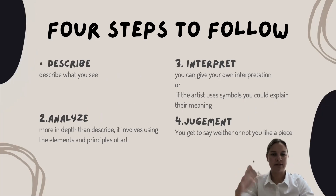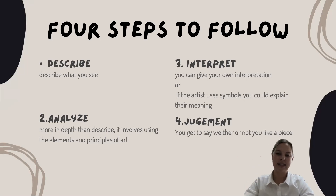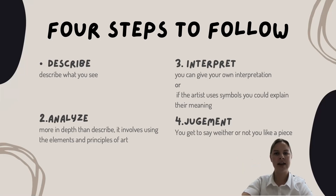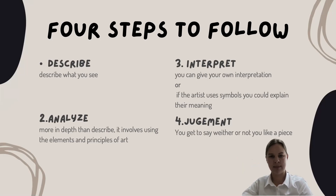So these are the first four steps. The first one is you need to describe. I think we're really good at describing. The second is to analyze. We've talked about these two things before. And then what's sort of new in this new way to analyze is you need to interpret the artwork and then also make a judgment about it.